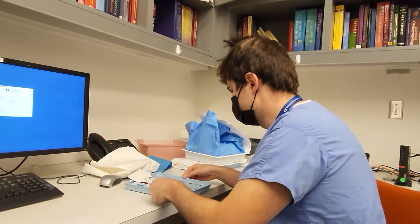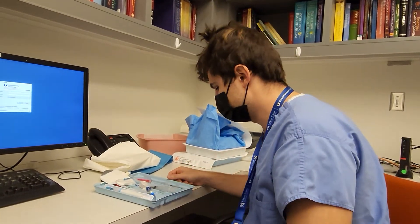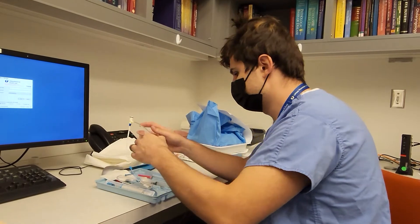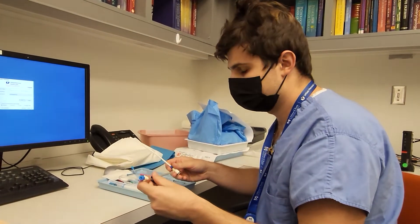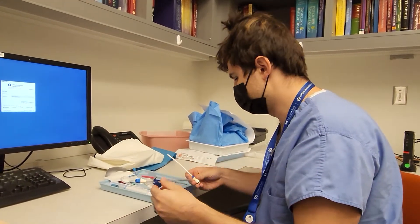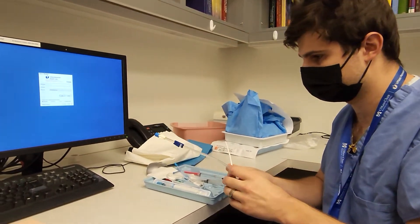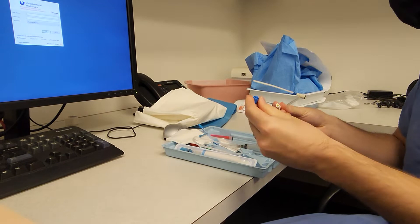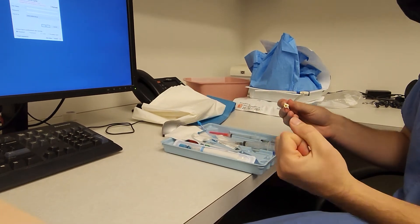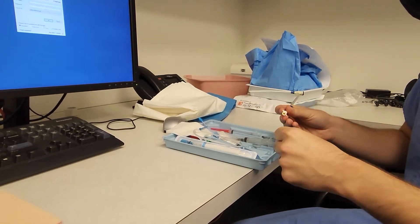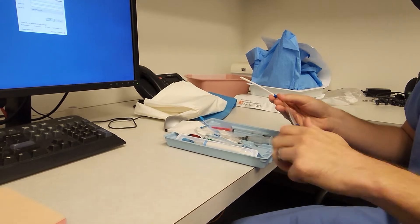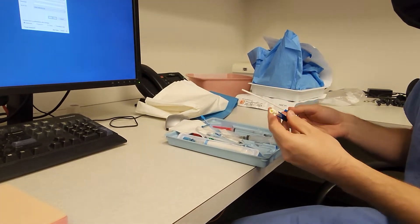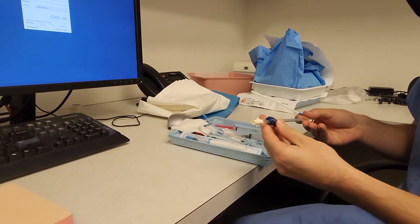All right, so I'm going to show you how to insert a cordis. First step is to flush the cordis. You need to take the cap off the end, get some sterile saline flush, and flush it through. And then clip it.